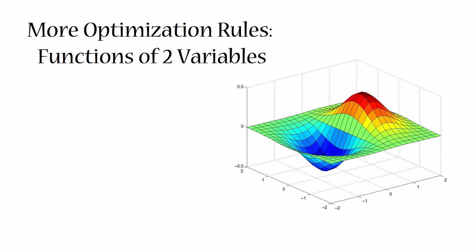In this video I'm going to talk about how to deal with optimization problems where you have a function of more than one variable. Since I'm not good at sketching in 3D, I've got my function of two variables over here, which is a surface. Any continuous function of two variables makes a surface if you try to plot it. When I talk about functions of two variables, I'm usually going to talk in terms of z is a function of x and y.